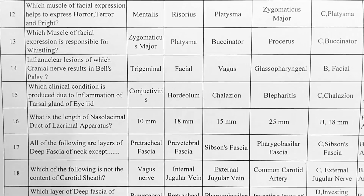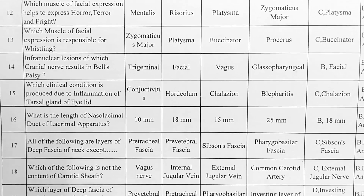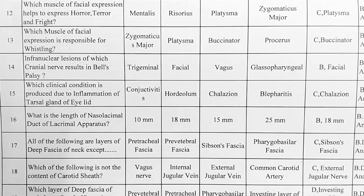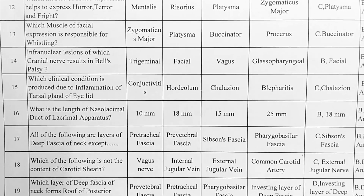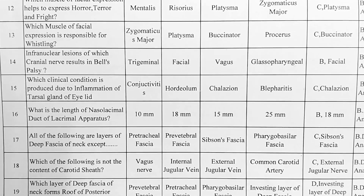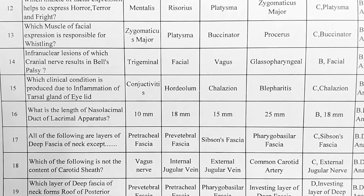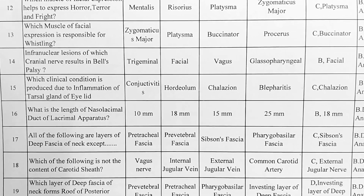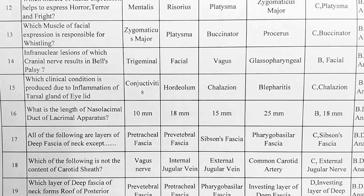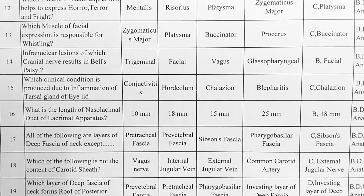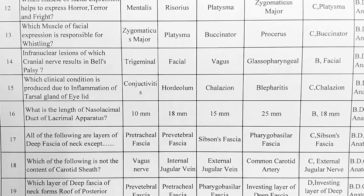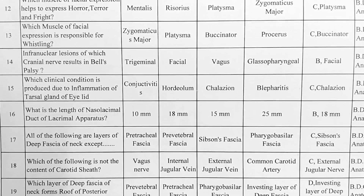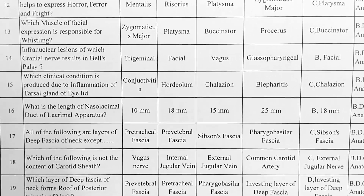Next. Which clinical condition is produced due to inflammation of the tarsal gland of the eyelid? Options — A: conjunctivitis, B: hordeolum, C: chalazion, D: blepharitis. Option C is correct, chalazion.